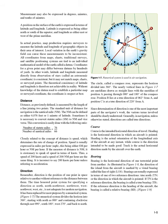Course is the intended horizontal direction of travel. Heading is the horizontal direction in which an aircraft is pointed — the actual orientation of the longitudinal axis of the aircraft at any instant — while course is the direction intended to be made good. Track is the actual horizontal direction made by the aircraft over the earth. Bearing is the horizontal direction of one terrestrial point from another. Bearings are usually expressed in terms of true north (TN) or the direction in which the aircraft is pointed. If TN is the reference direction, the bearing is called a true bearing (TB). If the reference direction is the heading of the aircraft, the bearing is called a relative bearing.